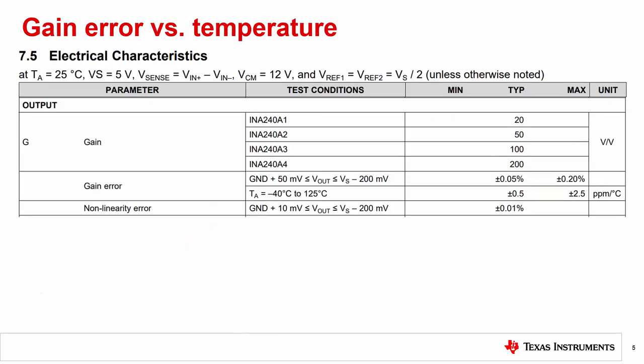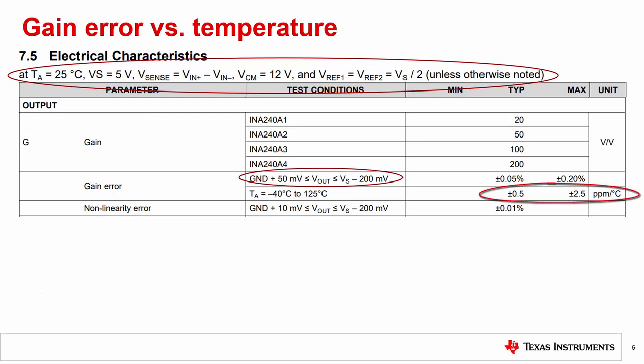It is important to understand that the gain error specification of a CSA only applies when the device is operating within the testing conditions of the datasheet. Once the ambient temperature deviates from the gain error testing condition, the engineer must account for gain drift.